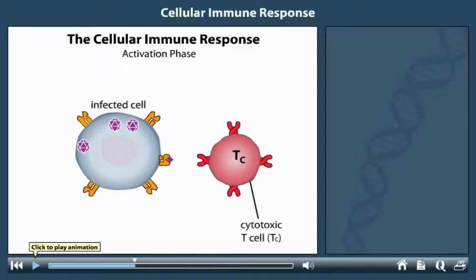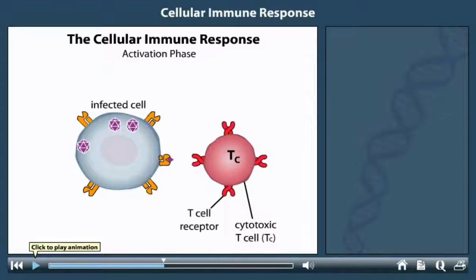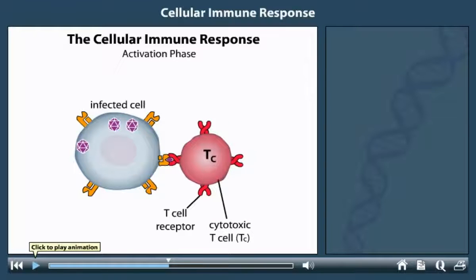A cytotoxic T cell participates in the next stage of the cellular immune response. This cytotoxic T cell has T cell receptors that are specific for the displayed antigen. The T cell receptors bind to the complexes of antigens and class 1 MHC proteins. This binding activates the cytotoxic T cell.